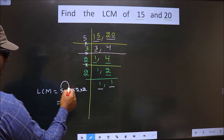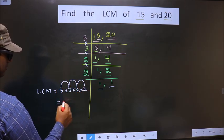5 into 3 is 15, 15 into 2 is 30, 30 into 2 is 60.